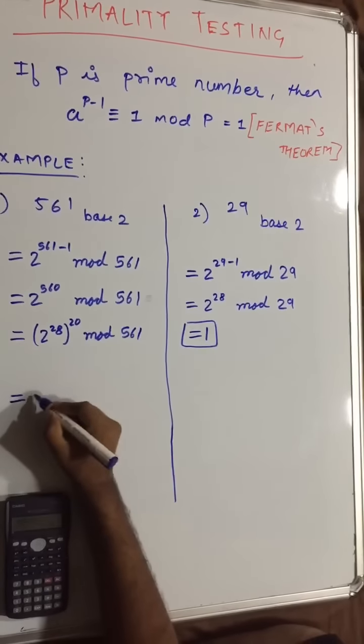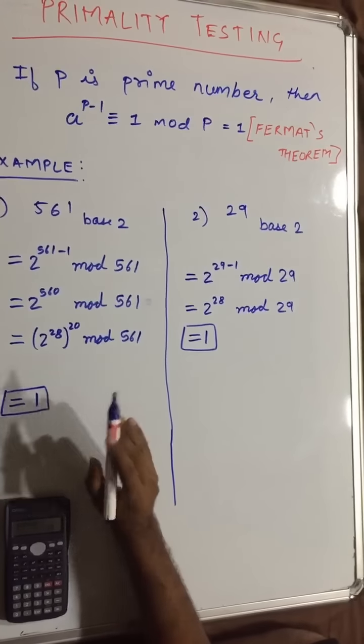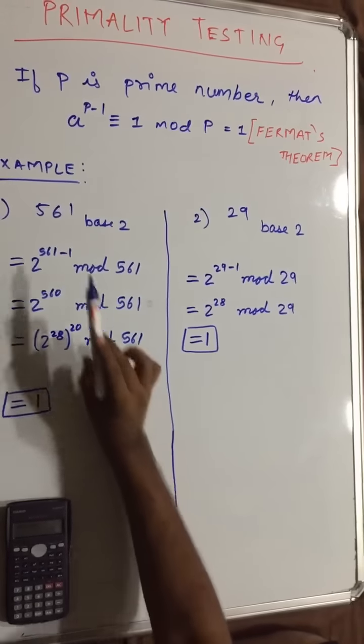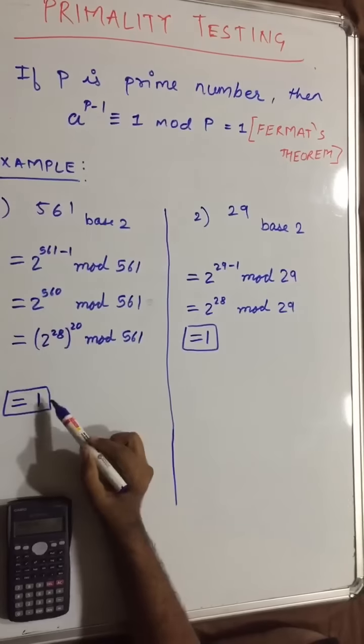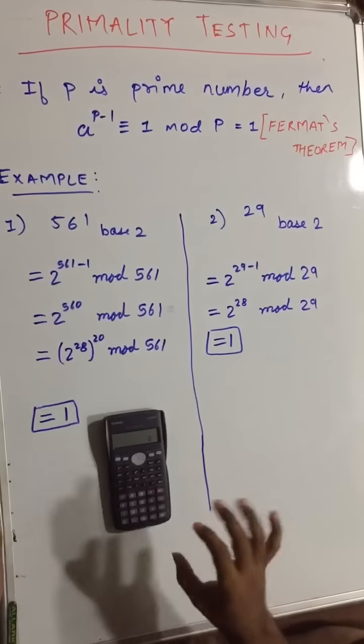So according to primality testing, it says that 561 is a prime number, but actually 561 is not a prime number.